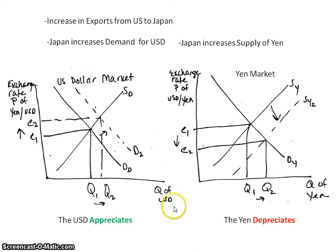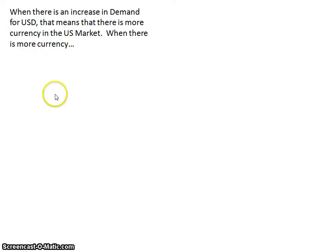These words are really important to use in FRQs. Instead of just saying the exchange rate rises, you should say that it appreciates. So when there's an increase in the demand for the U.S. dollar because of those exports, that means there's more currency floating around in the U.S. What does that mean for the graphs of the money market and the loanable funds when there is more currency?